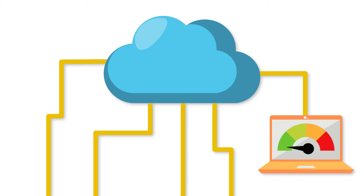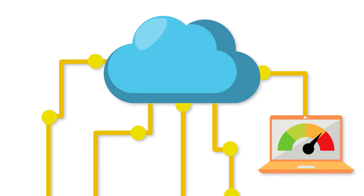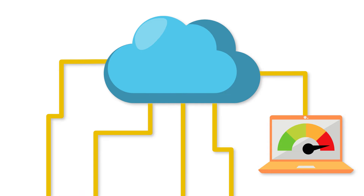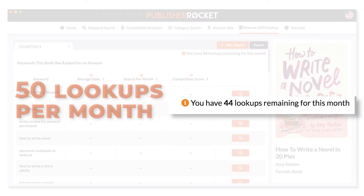Now, because this feature has a huge drain on our servers and our systems, and we know certain agencies and major publishing companies will probably use this feature at insane rates, we had to put a limit on it. Each license gets 50 uses of the feature a month, and then at the beginning of the month your count goes back to 50.